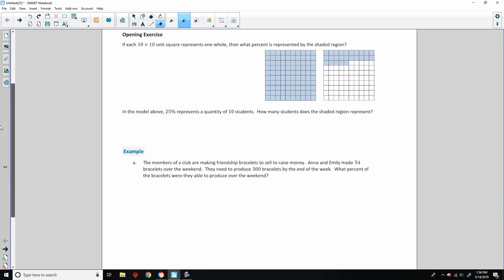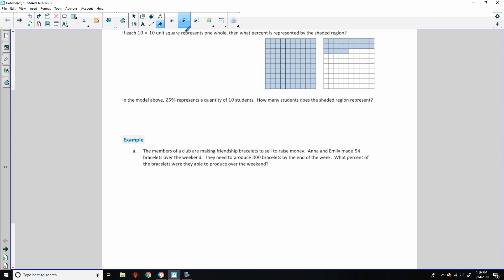Classwork opening exercise says if each 10 by 10 unit square represents one whole, so one whole is 100%, and it's 10 by 10, so every single square is 1%. Then what percent is represented by the shaded region below? Well, there's 100% here. This is a row of 10, this is a row of 10, and then we have 1, 2, 3, 4, 5, totaling 25.